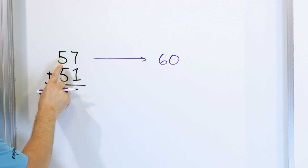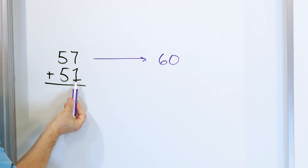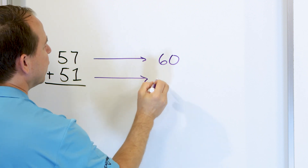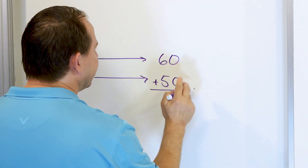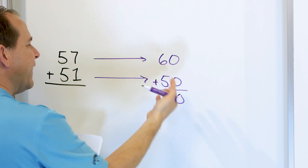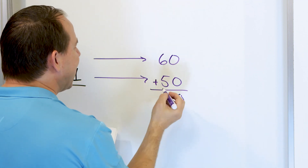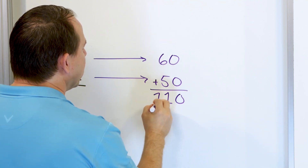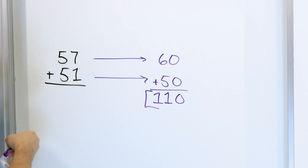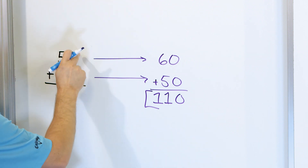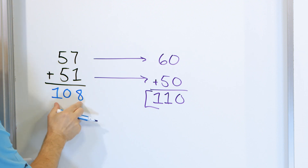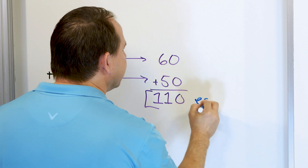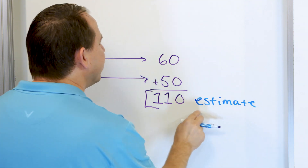For 51, we round to the same position — the tens place. The next door neighbor is a one, so we round down to 50. Now we add: zero plus zero is zero, six plus five — five plus five is 10, and six is one more, so it's 11. We put the one here and carry the one for 11. The estimate is 110. The real answer is 108, but the estimate is 110. It's not exactly correct — that's not the point of estimating.